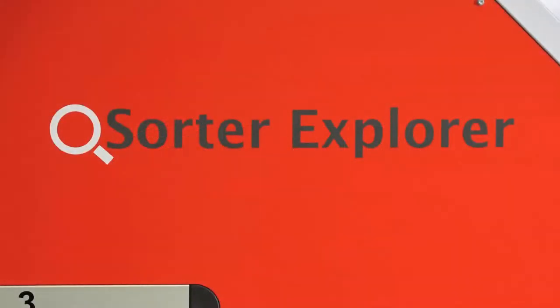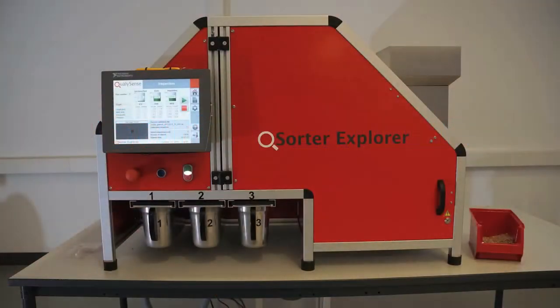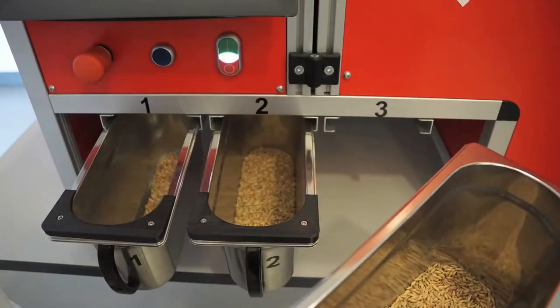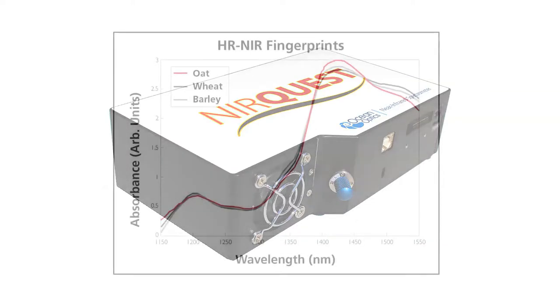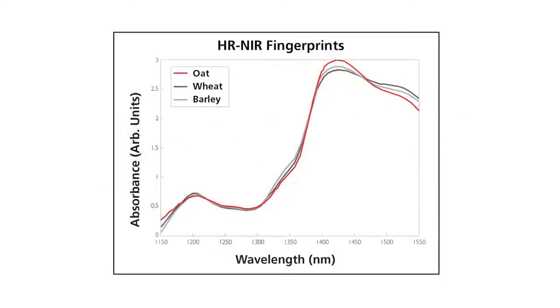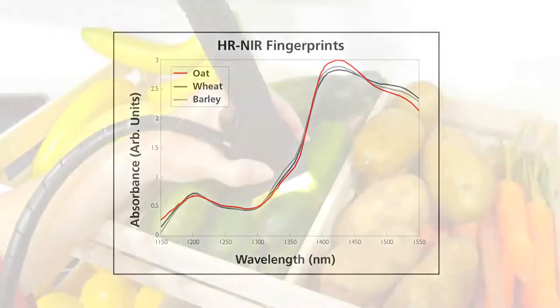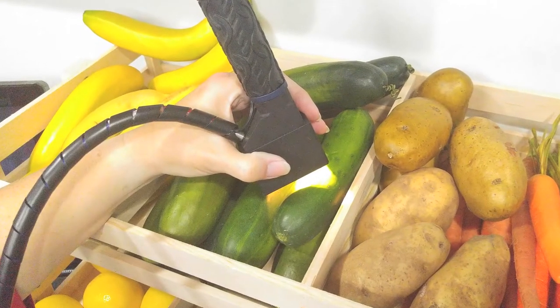The Q-Sorter generates outstanding benefits in quality control, process optimization, and risk management. The Q-Sorter uses an Ocean Optics NIR spectroscopy system to optically analyze samples. NIR spectroscopy is an important tool for the food industry and is used routinely in many agricultural applications.